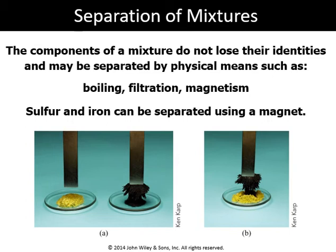First, we should know what type of mixture we have. Most of the time we work on solid-liquid or liquid-liquid mixtures. One form of mixture is a combination of two solid components. If we have iron, we may use a magnet to separate iron particles from other components. This method we call magnetism, and it's used only when we have iron particles in the mixture.